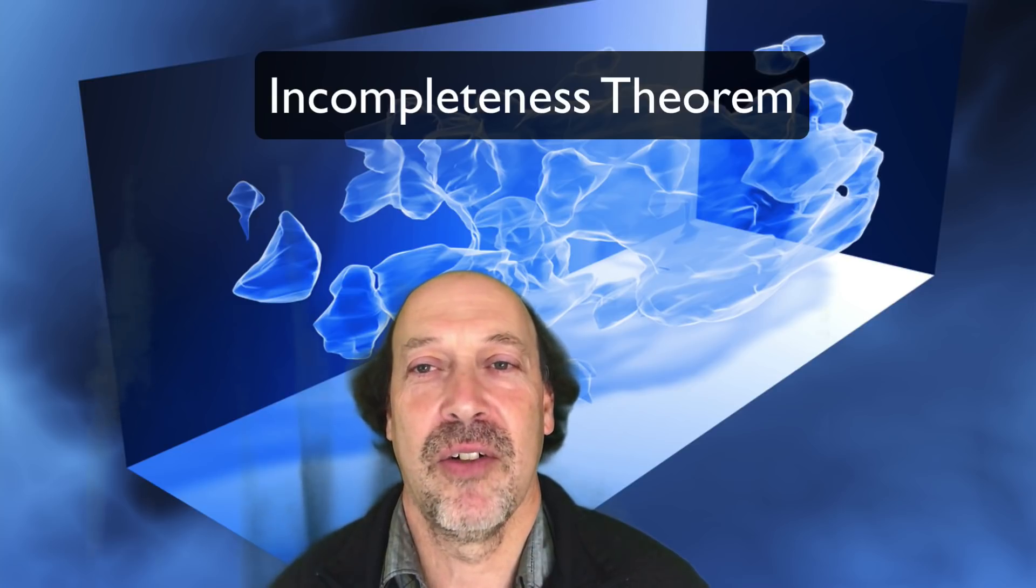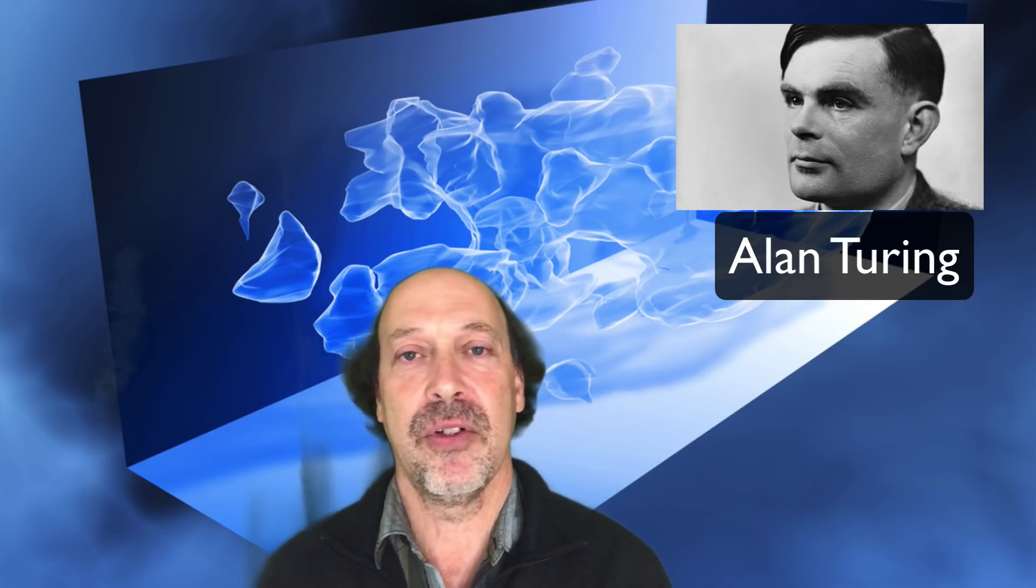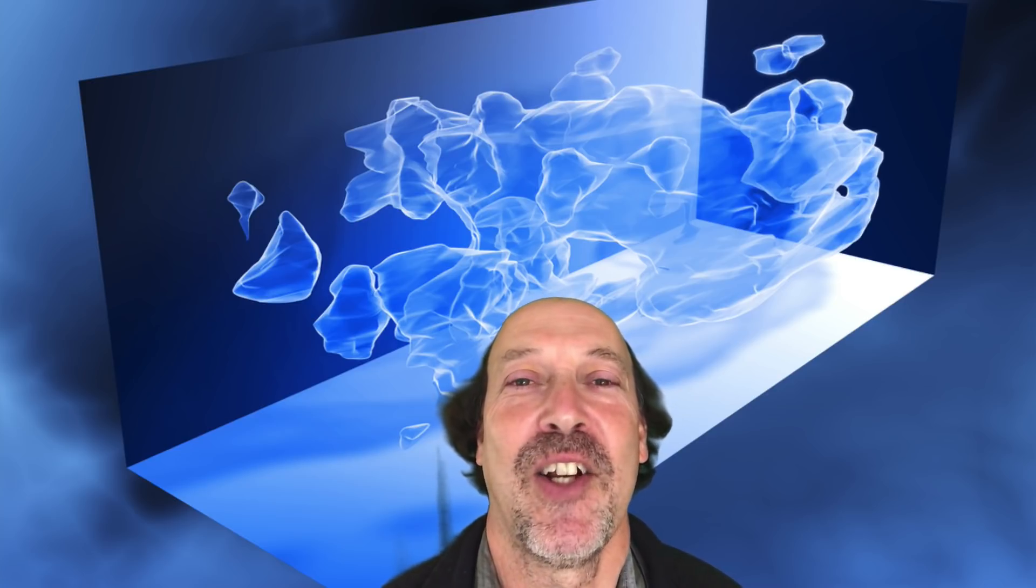The incompleteness theorem says that no matter how watertight your logical system is, there are always going to be things that are true that you can't prove. Later, Alan Turing went on to develop this, the famous mathematician that broke the Nazi codes, his group, the Enigma Project, to break the Nazi cipher machines. And you might have seen that movie, The Imitation Game, all about Alan Turing and his work at Bletchley Park with the Code Breakers, starring good old Benedict Cumberbatch.